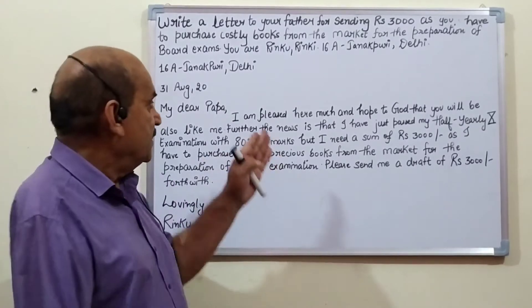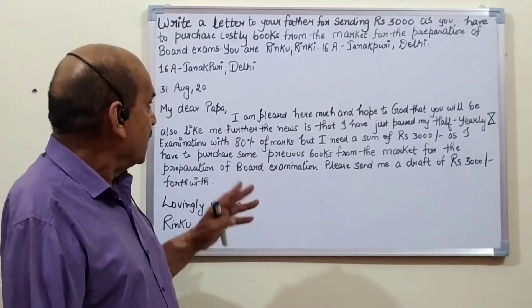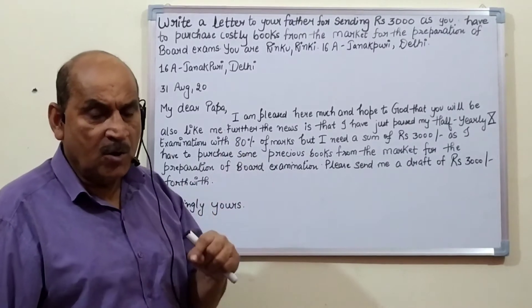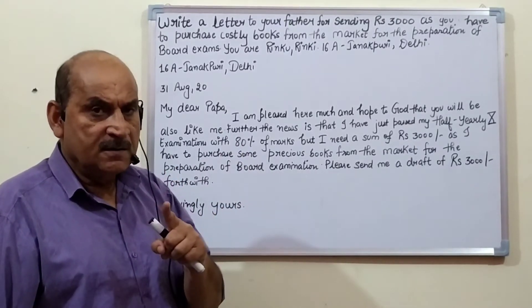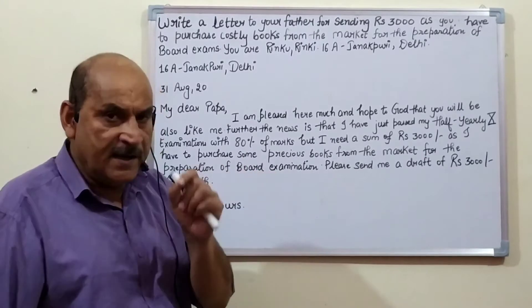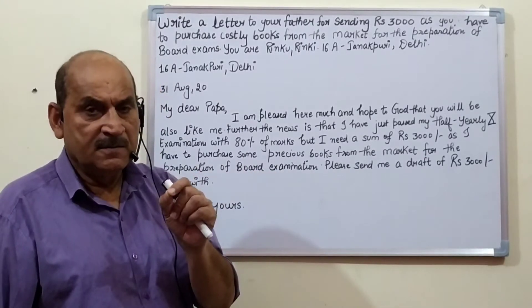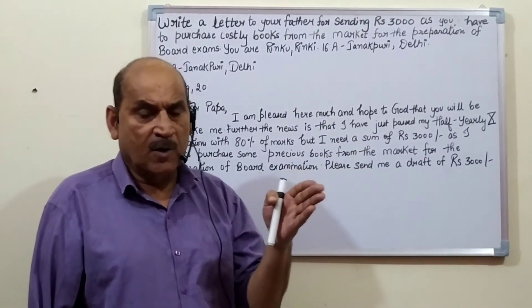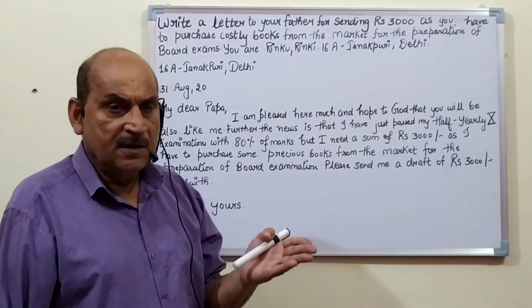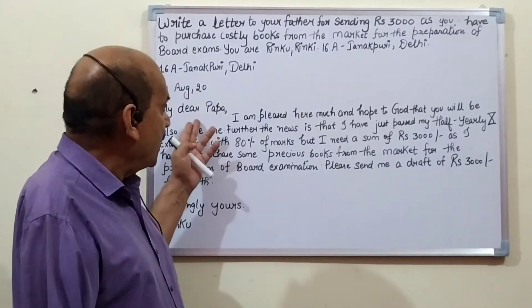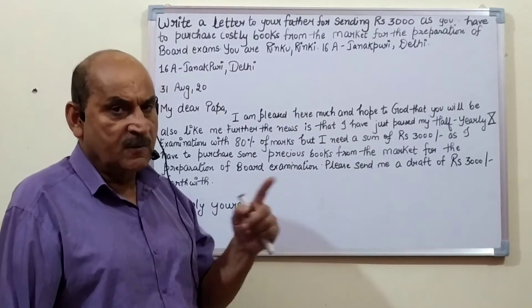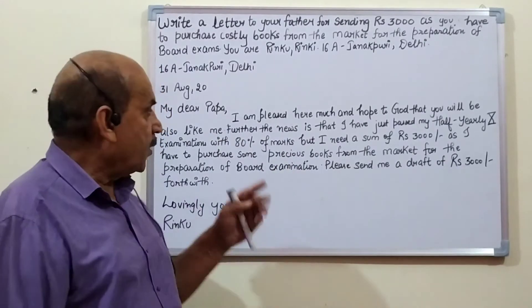Now let us study the differences. Difference number one and difference number two: in a formal letter, the formal letter is written with a to-address and subject line, while in an informal letter, the subject is not written.